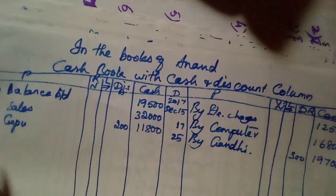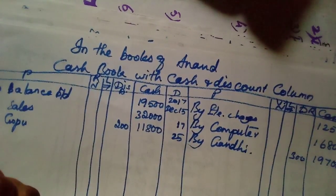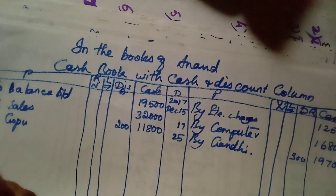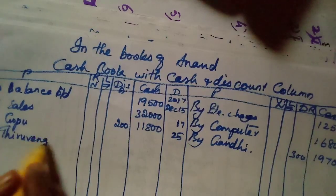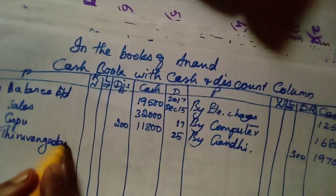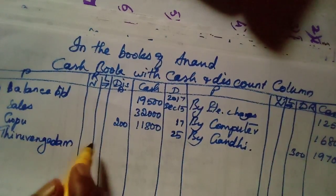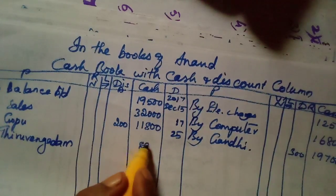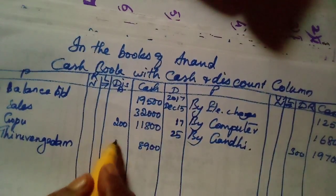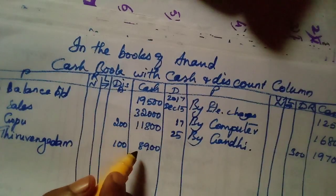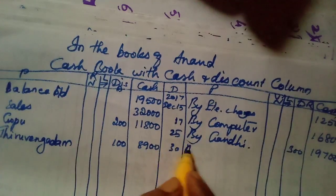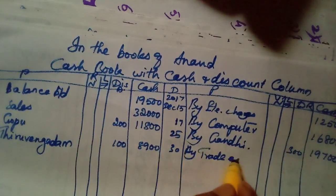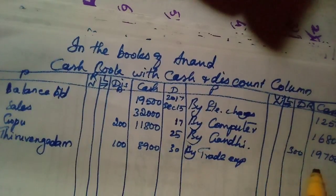Received cash from Thiruvengadam, date 28 — to Thiruvengadam: 8,900 cash, 100 discount allowed. Paid trade expenses — by trade expenses: 2,500.